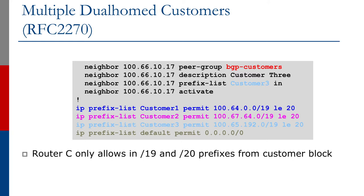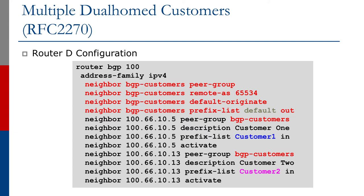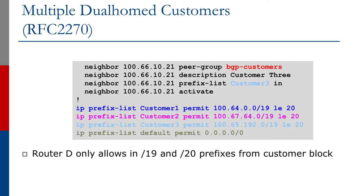This helps scale the configuration for the network operator. If we look at Router D's configuration, it is exactly the same. This is the nice thing for the network operator — they don't need to worry about which link the customer is sending the sub-prefixes of the aggregate. They put on a standard configuration, the same peer group, and apply it to the three customers as the slides show.